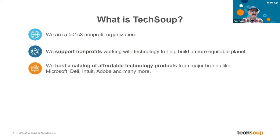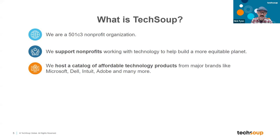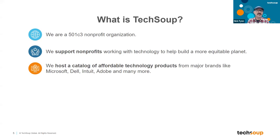How do we do that? TechSoup hosts a catalog online at TechSoup.org of affordable technology products from major brands like Microsoft, Dell, Intuit, Adobe, and many more. We understand that the cost of technology itself is one of the real blockers for nonprofits adopting technology. So we do our best to negotiate good prices with these technology providers and then pass those savings on to nonprofits. TechSoup charges its own modest admin fee to support our operations as well.